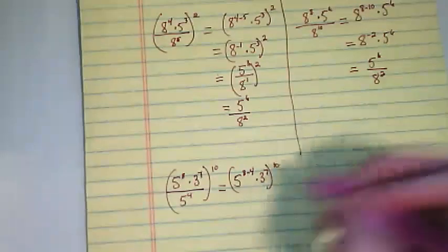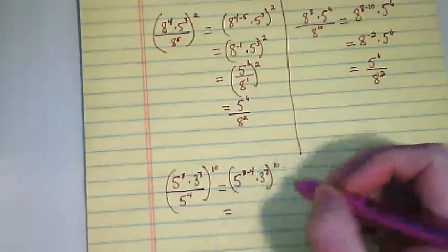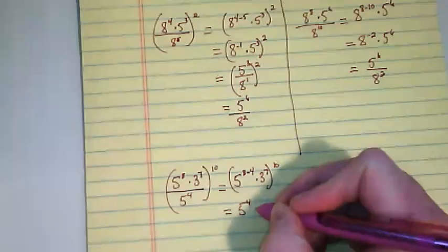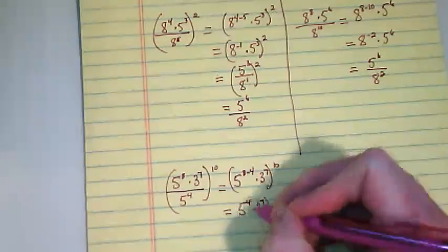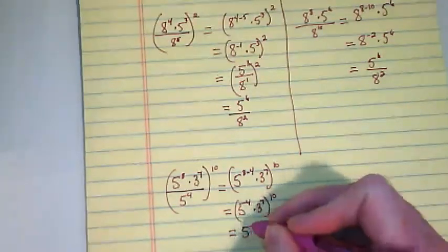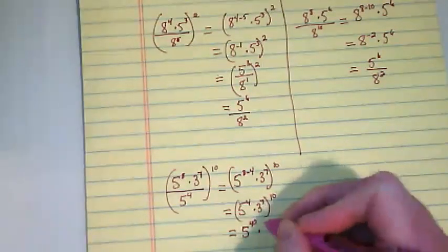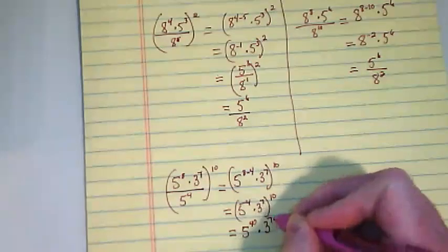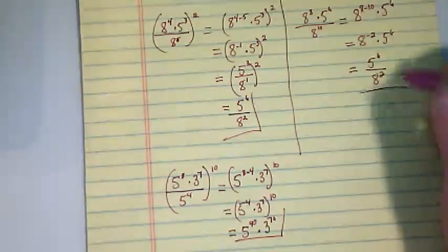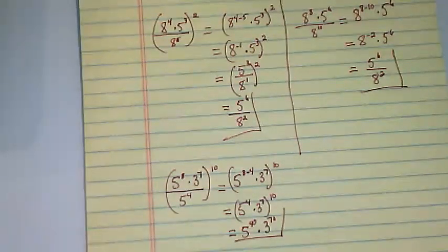Raised to the tenth power, that's going to be five to the four times three to the seventh, raised to the tenth power. And I end up with five to the fortieth power times three to the seventieth power. So there are our answers, and let me know if you have other questions.